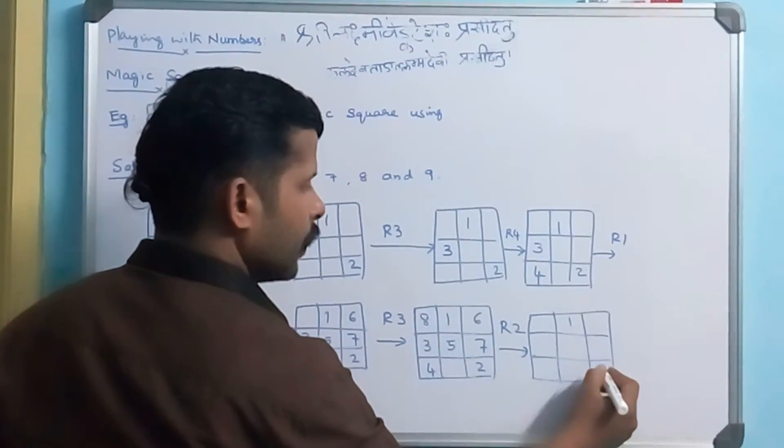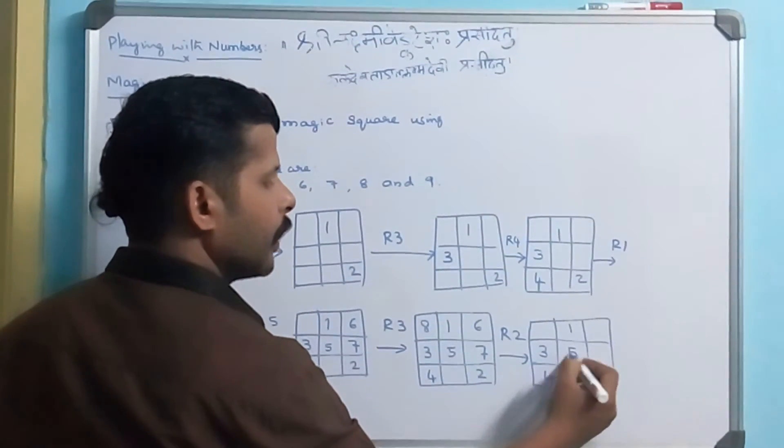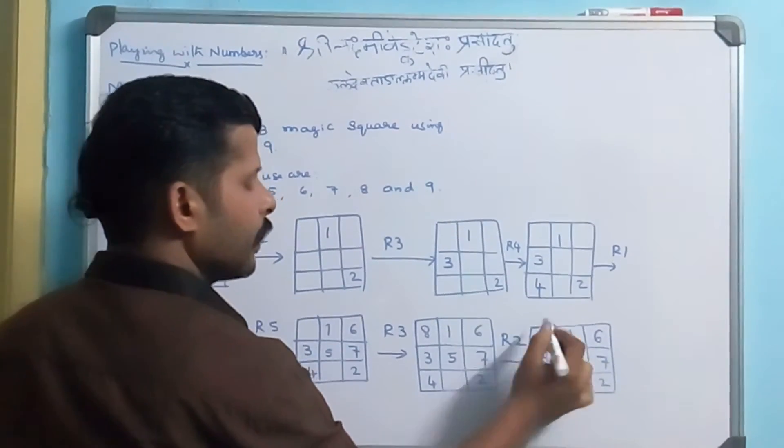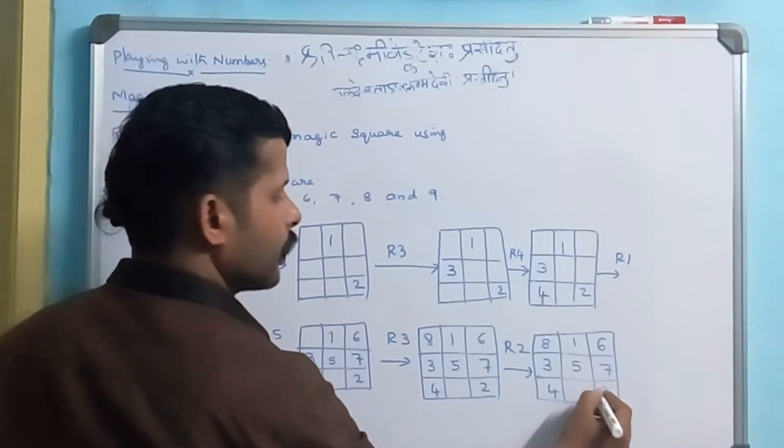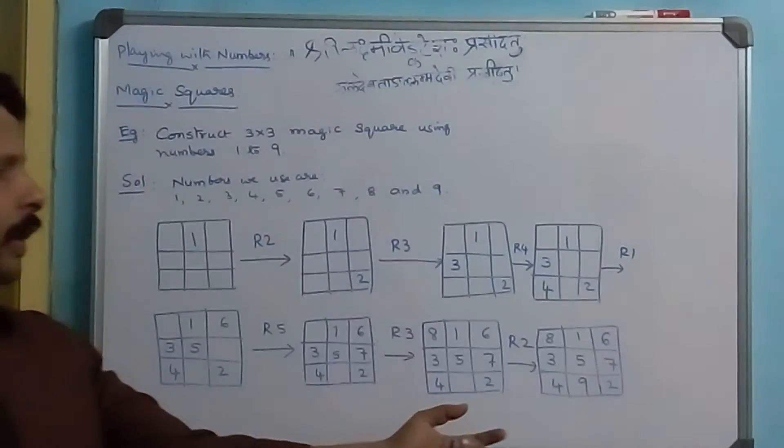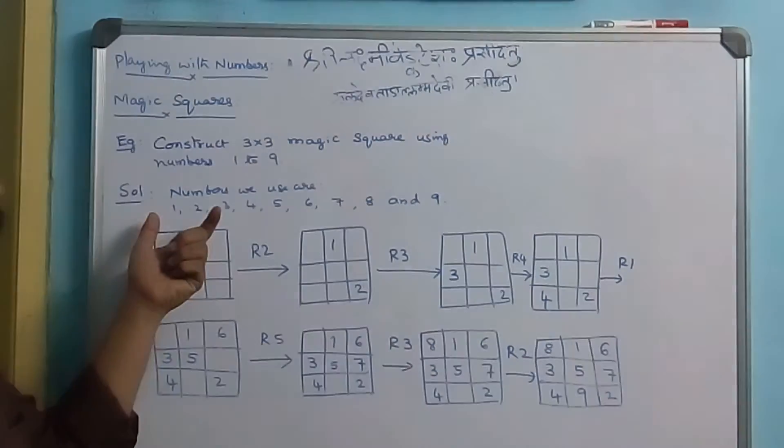This is how we complete the magic square using numbers 1 to 9.